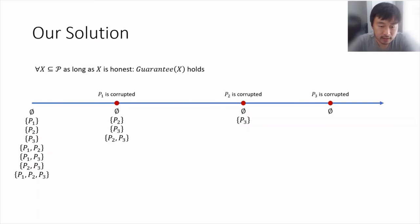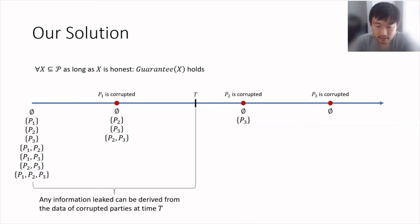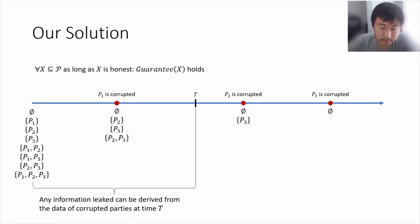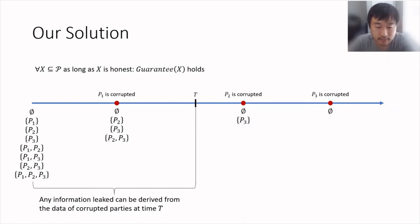Going back to the guarantees: the guarantee for X says intuitively any information leaked to the adversary so far depends only on the inputs of parties not in X. If we pick the largest set X, then all information the adversary has learned so far depends only on the data of the corrupted set at that point. This holds for any point t in time: any information leaked so far up to time t can be derived from the data of the corrupted parties at time t. This is in contrast to the standard definition — the key point is that different statements here do not need to be consistent with each other, and this is exactly what allows us to overcome the commitment problem.